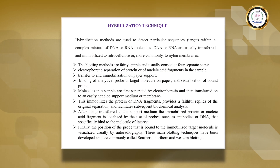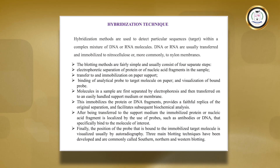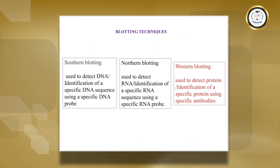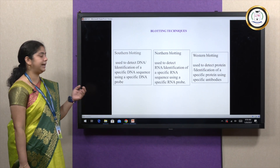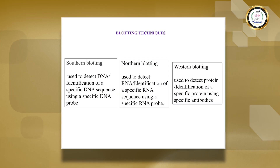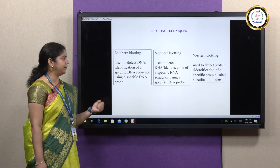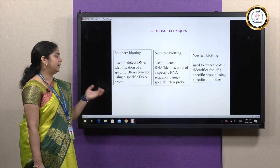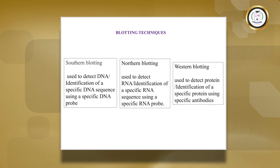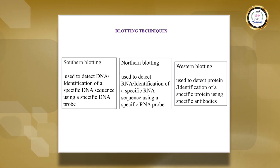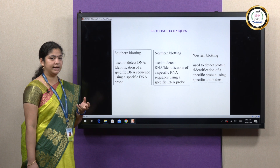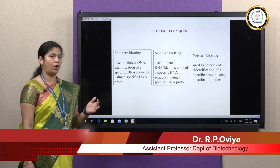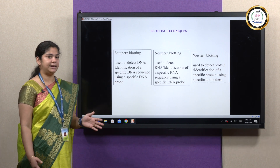Other hybridization techniques include three blotting methods: Southern blotting, Northern blotting, and Western blotting. Southern blotting is used to detect DNA and identify a specific DNA sequence using a probe. Northern blotting detects mRNA being transcribed using a specific RNA probe. Western blotting detects protein — a specific protein can be identified using a specific antibody through antigen-antibody interaction.